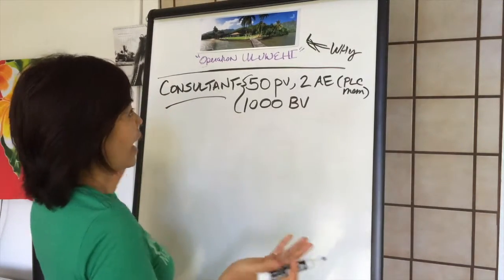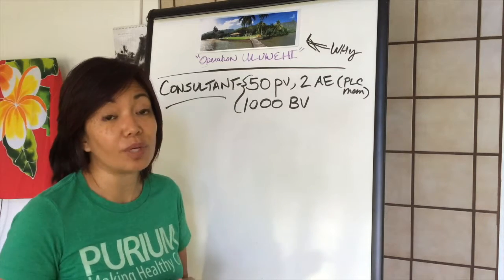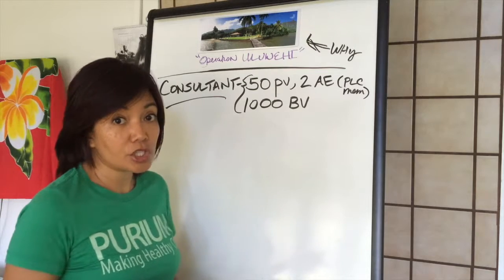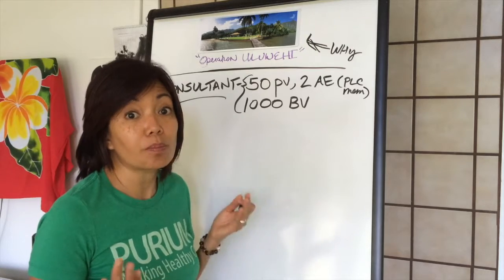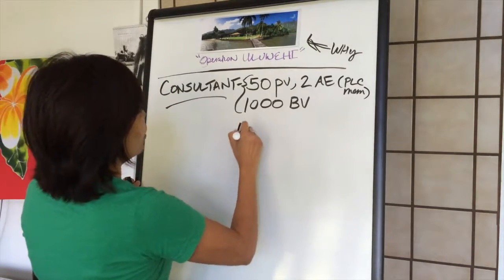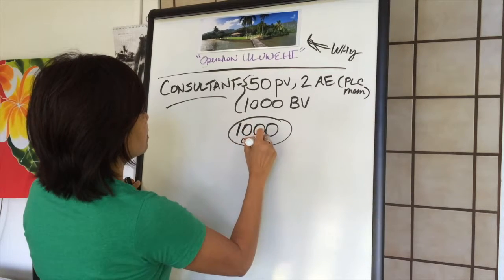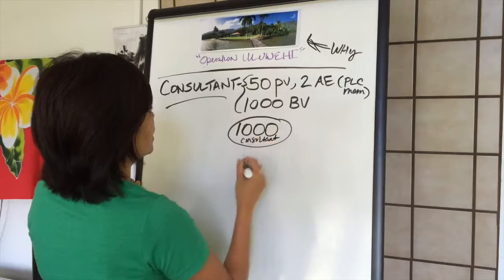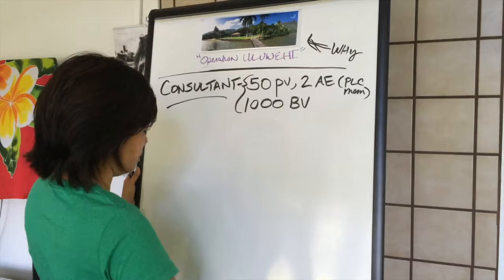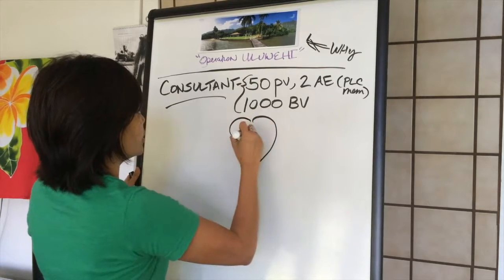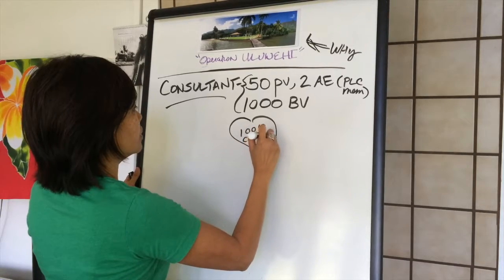Okay, so how do you get 1,000 BV you're asking yourself. Now remember we talked about BV, right? Business volume. Each package, each way you come in, every product that we have has BV attached to it. So if the goal is 1,000 BV to become a consultant, this is you. I should actually make that into a heart. Because we like hearts. Team Lee loves hearts. 1,000 BV for a consultant.